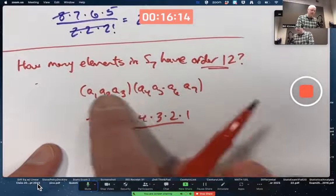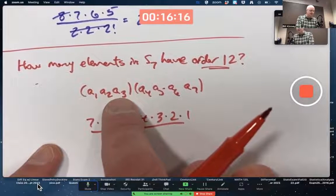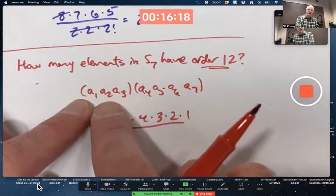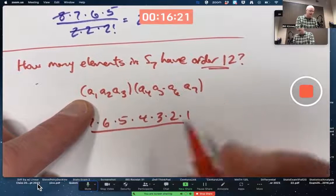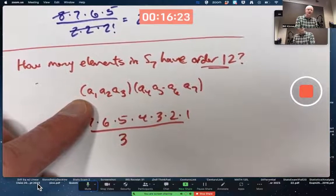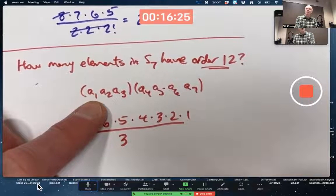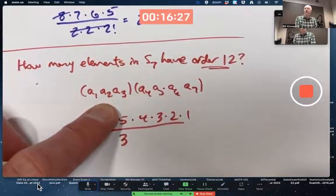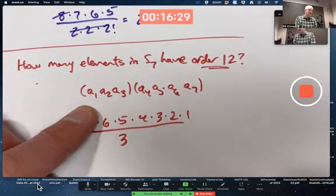But I do have to divide by the number of ways of writing each of these. This one—a1, a2, and a3—could be written in three ways. It could be written as written, or a2, a3, a1, or a3, a1, a2.